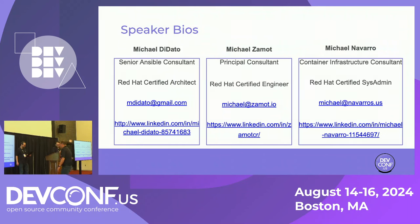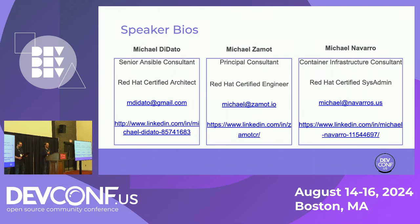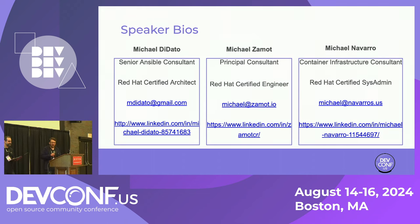Thank you, Mike. My name is Michael Zamot. I've been working at Red Hat for around seven years, working with OpenStack, OpenShift, Red Hat virtualization, you name it. I have around 15 to 20 years working with open source, and I've been involved in open source communities in Costa Rica and the United States. Getting back to you, Mike.